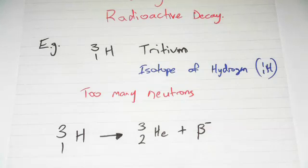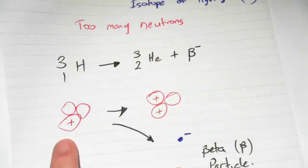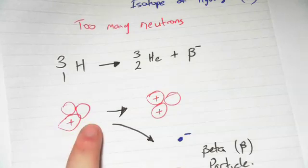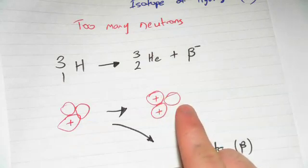But for example here, you've got tritium decaying down to become helium-3, which is fairly stable, and it's emitting what's called a beta particle. We'll talk more about them. They're just electrons. So you can see that you've got a nucleus with one proton and two neutrons emitting an electron to get a nucleus with two protons and one neutron.